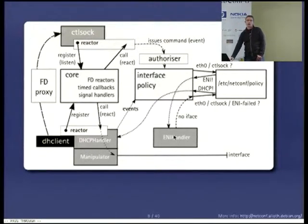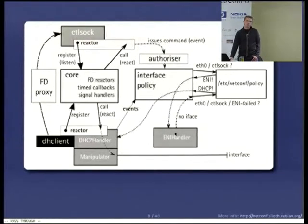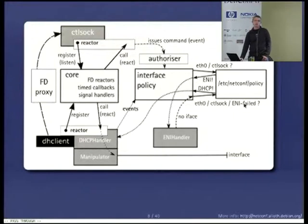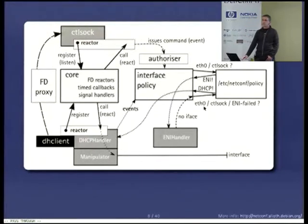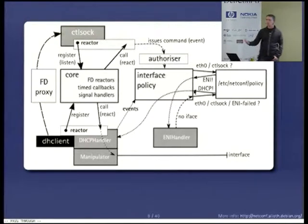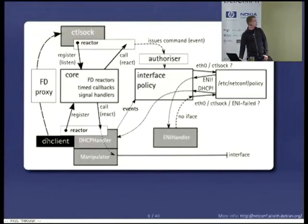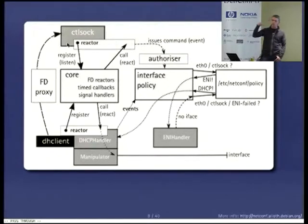In our example, ENI handler fails to find an iface definition for eth0 and raises an event saying it couldn't do it. Upon reception of a failed result from ENI handler, the interface policy consults the configuration backend to figure out what to do next — given the ifup command for eth0 from the control socket and ENI's failure. The configuration backend answers: go ahead and do DHCP. So the interface policy instantiates a DHCP handler, which then spawns a DHClient sub-process and hooks up file descriptors to the control socket so you can actually see DHClient's output without having to go through syslog.